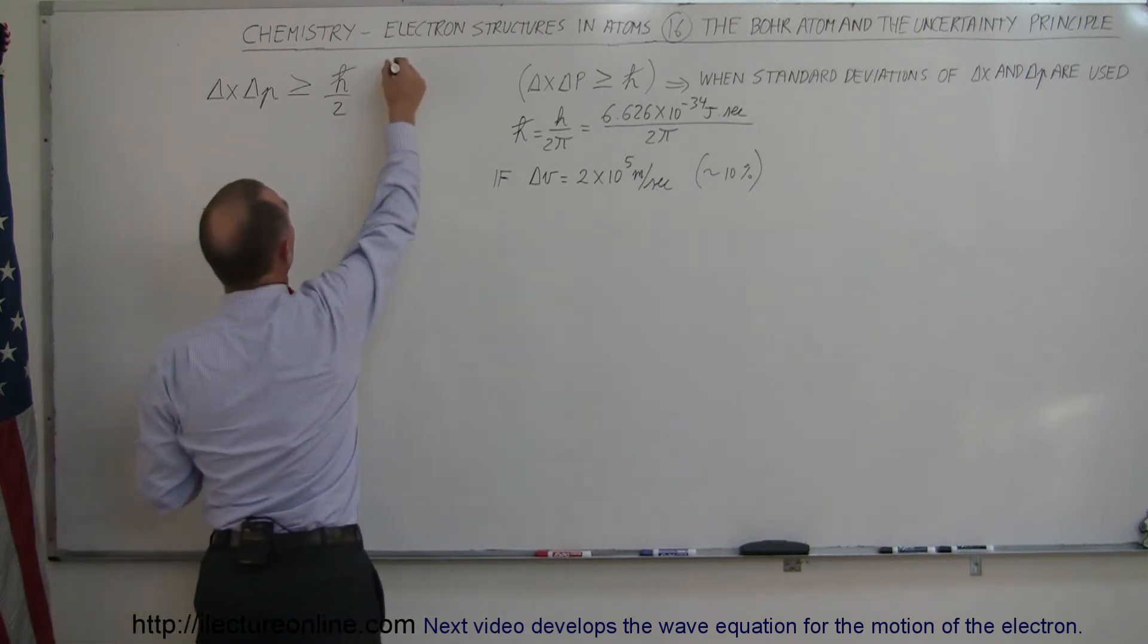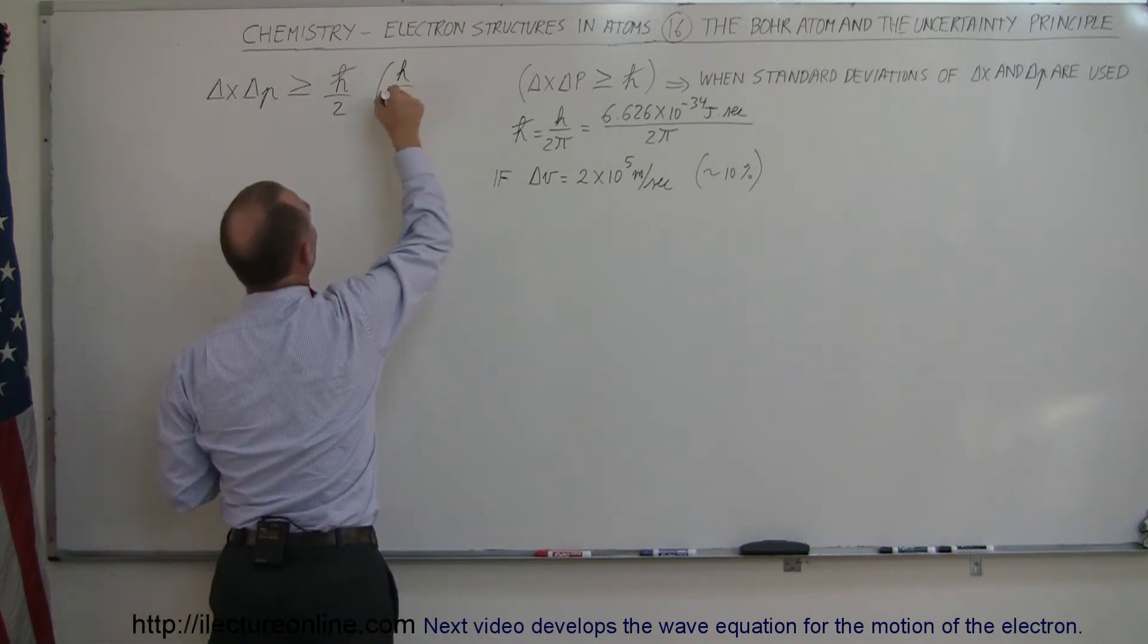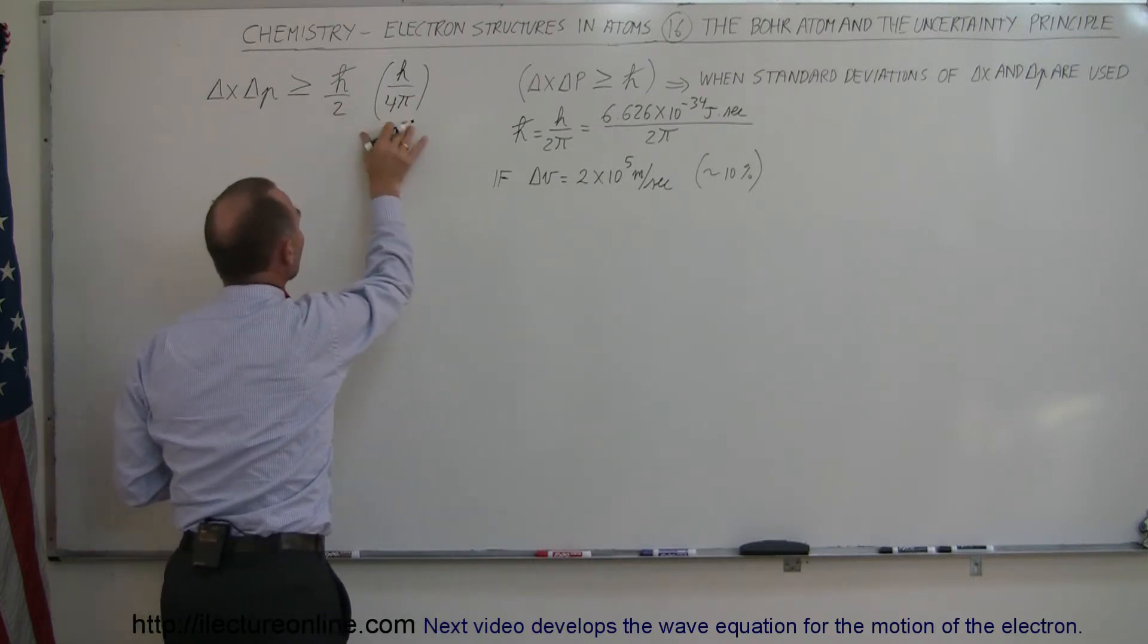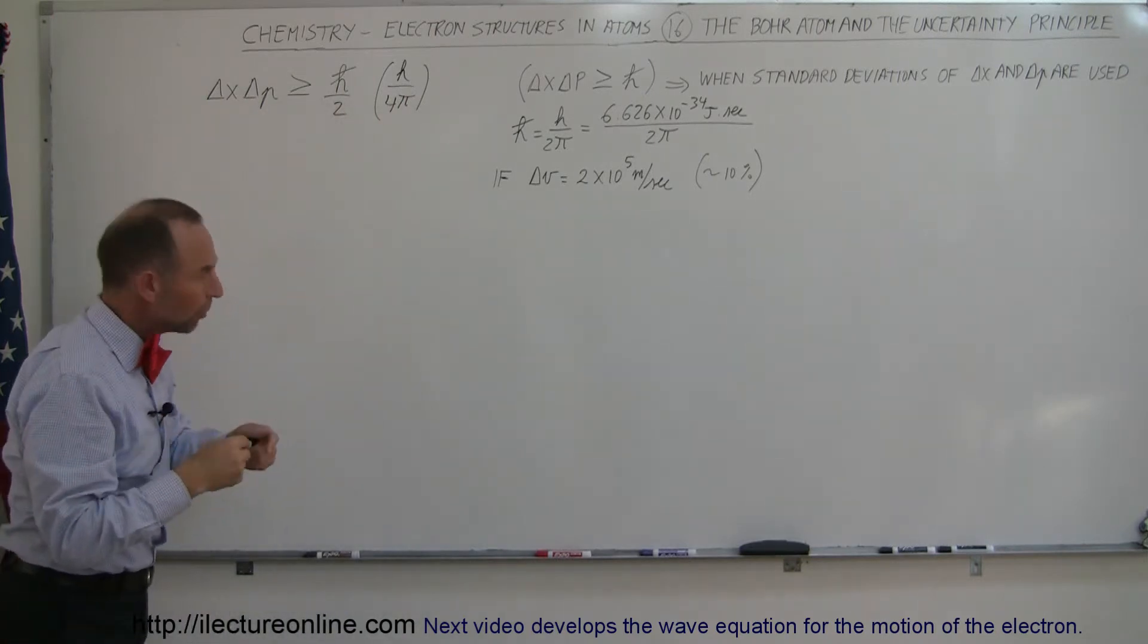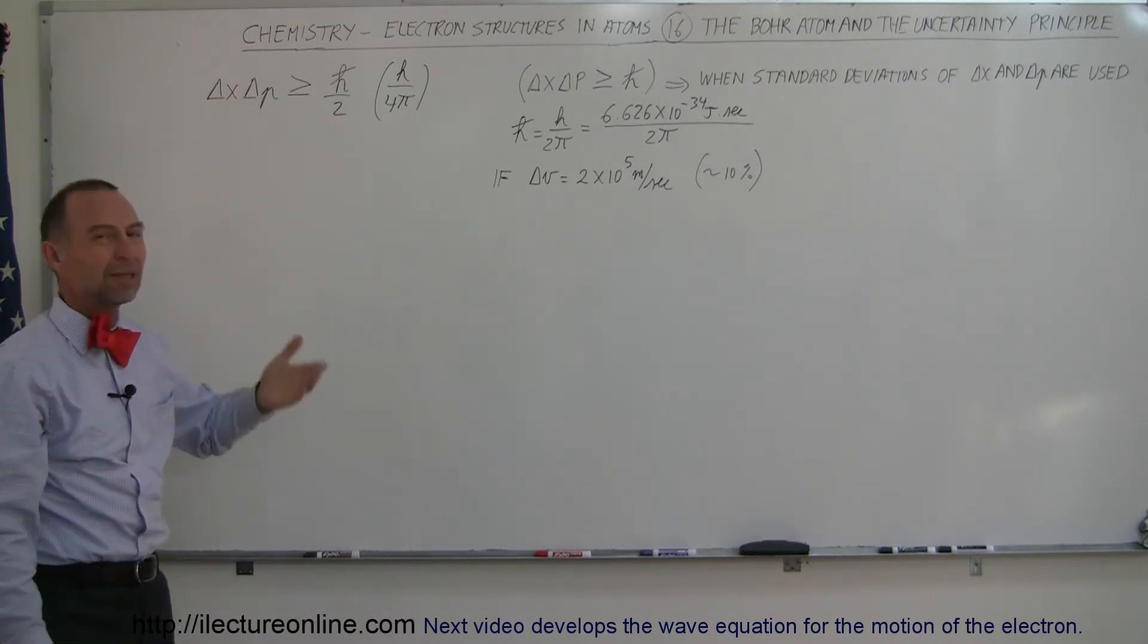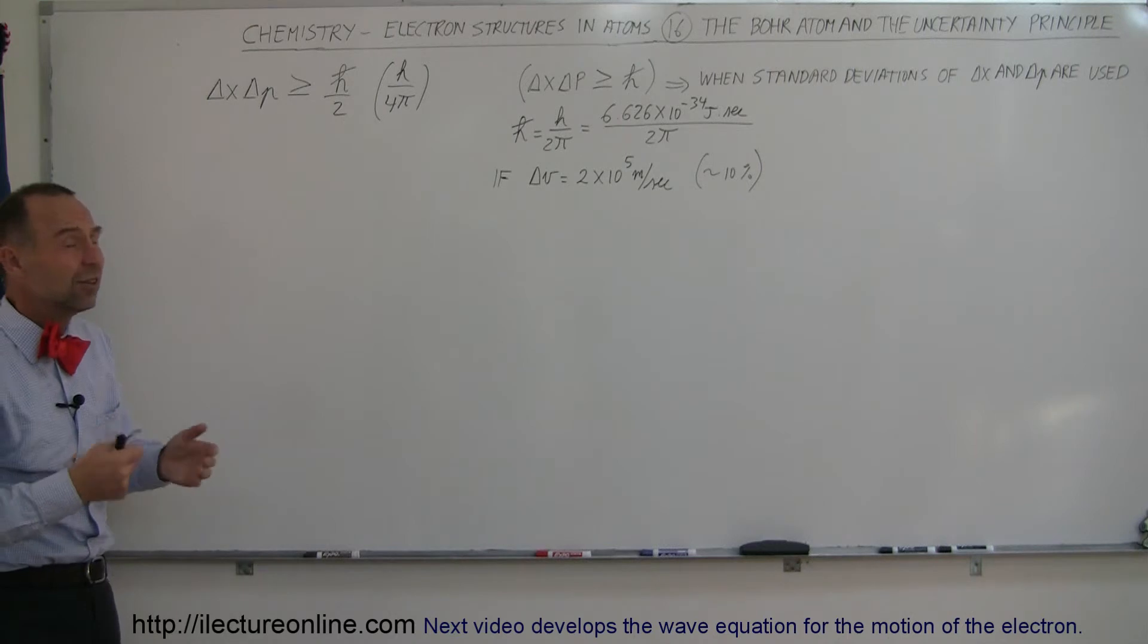So this is really, if you want to think about it, this is really H divided by 4π. So as long as the product is greater than that, we can then determine what the uncertainty will be in either its position or its momentum. Of course, momentum is mass times velocity, which in other words means in its velocity.